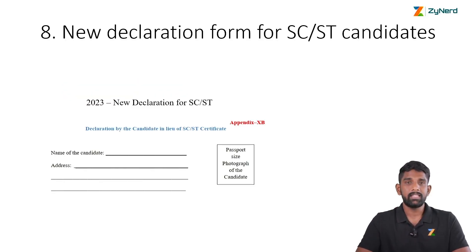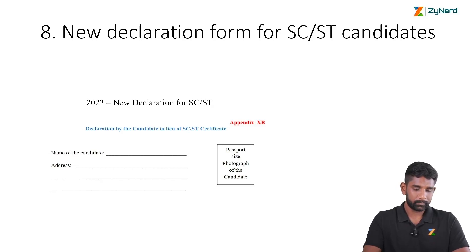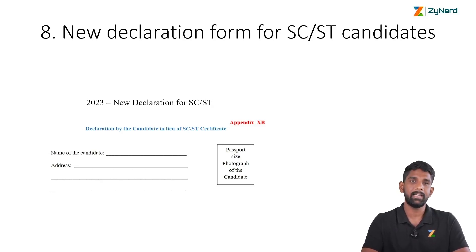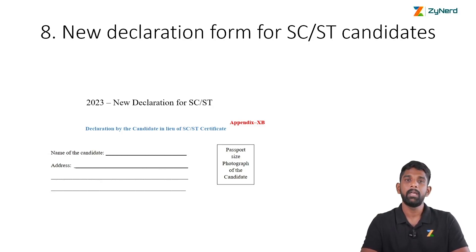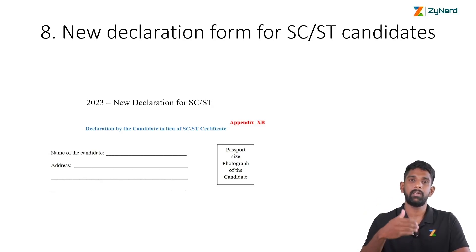For SC and ST candidates, a new declaration form has been given for this year. All SC and ST candidates should take a look at this declaration form. In case you don't have the SC or ST certificate, you can fill the declaration form instead and submit it with the application form.